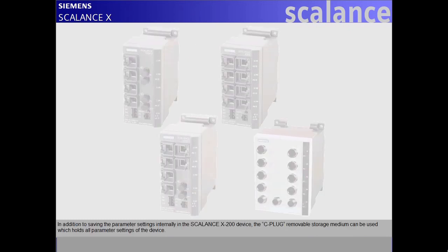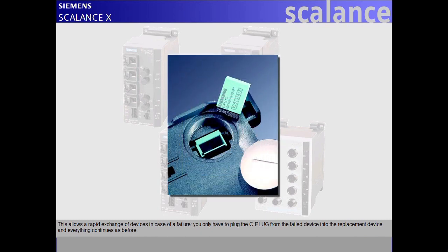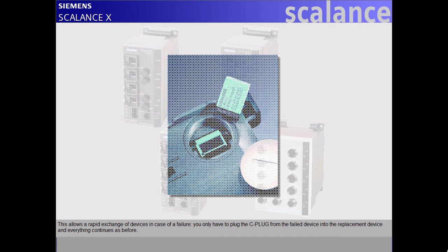In addition to saving the parameter settings internally in the Scalance X200 device, the C-Plug removable storage medium can be used, which holds all parameter settings of the device. This allows a rapid exchange of devices in case of a failure. You only have to plug the C-Plug from the failed device into the replacement device and everything continues as before.